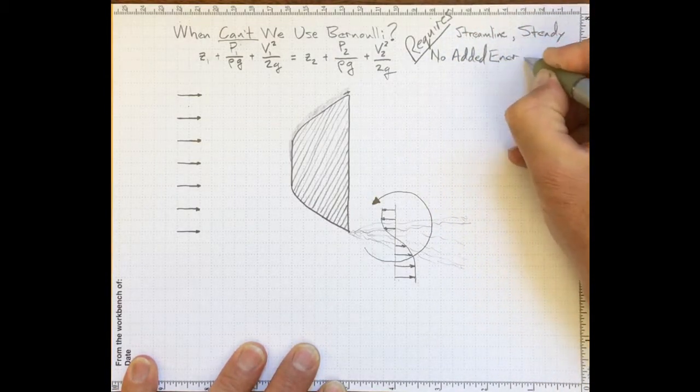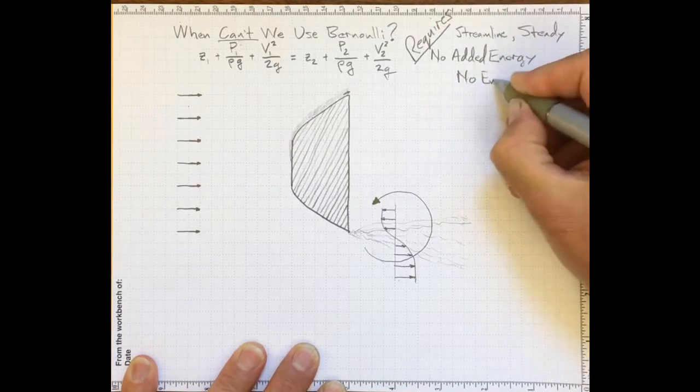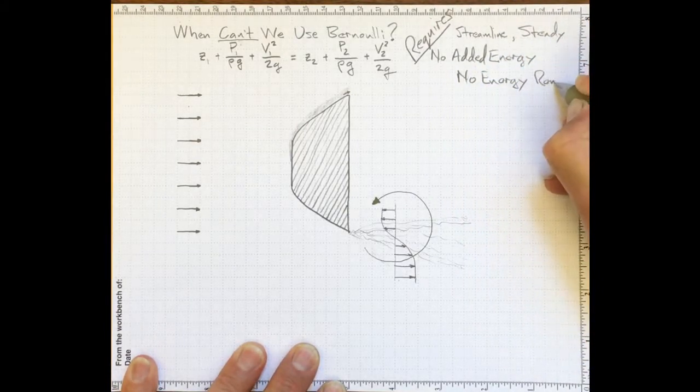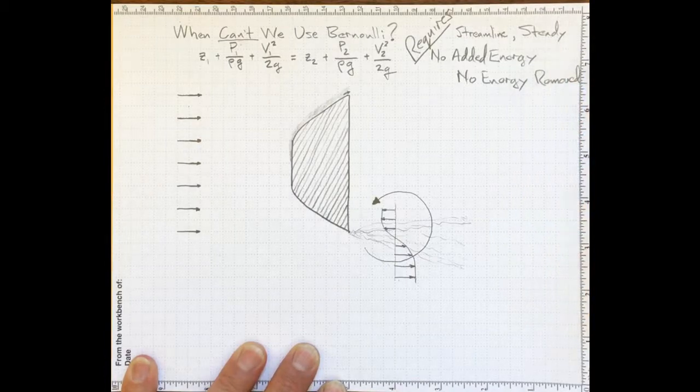That's so that you can follow the path of a particle and have all of the particles on the same path, in a steady flow on a streamline. There must be no mechanical energy added or removed. No added energy, no energy removed.